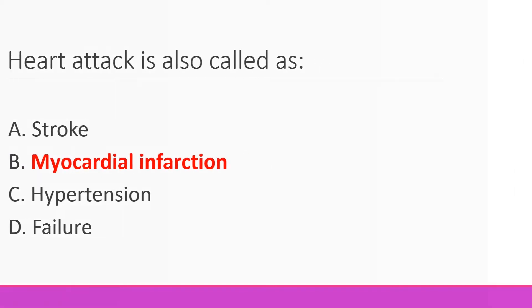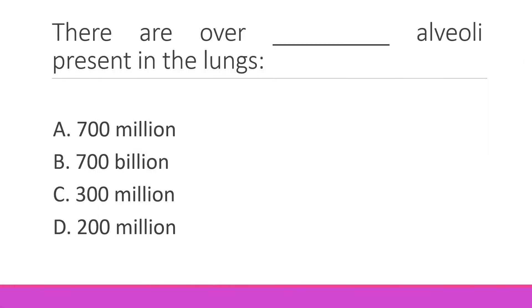There are 700 million alveoli present in the lungs. The right option is alpha.